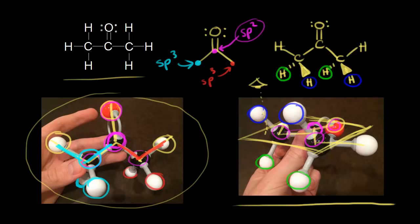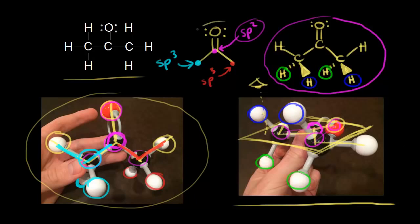For acetone, you normally wouldn't draw out a three-dimensional bond line structure — there's not much of a point. I just did it to help visualize things and to contrast an sp2 hybridized carbon with an sp3 hybridized carbon, and to think about what the molecule looks like in three dimensions. For something like acetone, you're going to stick with the regular bond line structure. But it is important to build these molecules, visualize them, and understand this concept before you move on to other parts of organic chemistry.